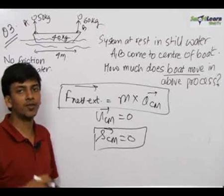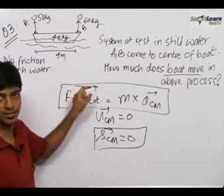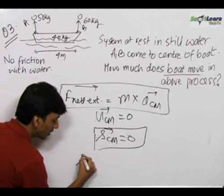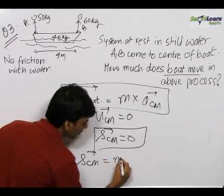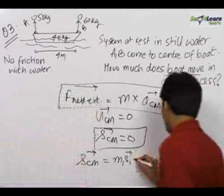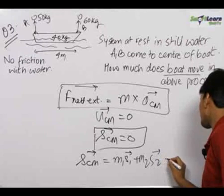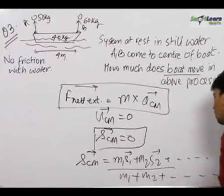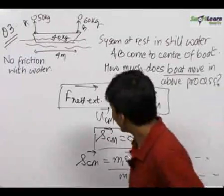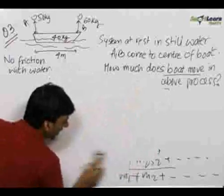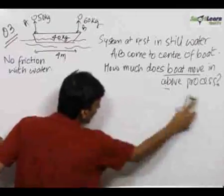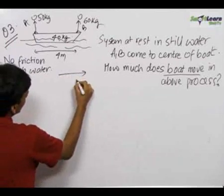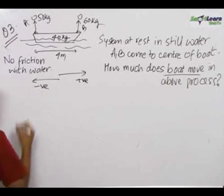Even if the displacement of centre of mass had come out to be some value, we would equate the total displacement using the centre of mass formula. The displacement of centre of mass equals (m1·s1 + m2·s2 + m3·s3) / (m1 + m2 + m3). Let us apply this to the question. Be very careful about directions since displacement is a vector quantity. Let us take the right direction as positive and the left direction as negative.